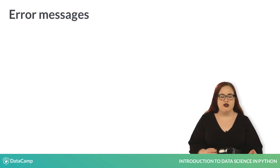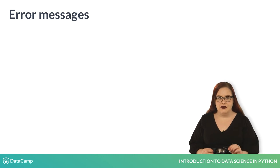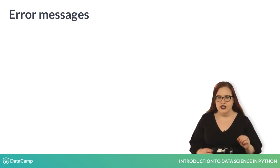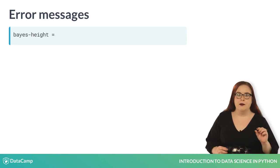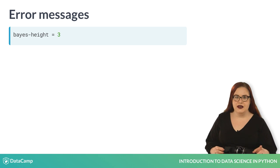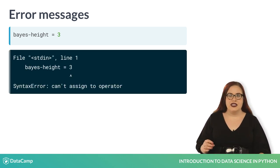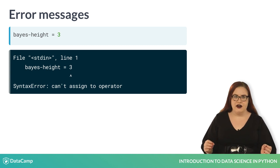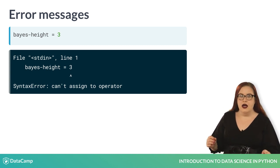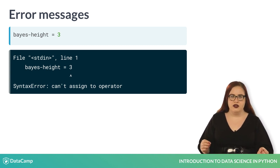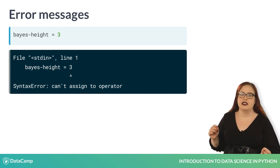Let's see what happens when we try to use an invalid variable name. The variable Bayes-height is invalid because of the hyphen. When we try to enter it, we will receive a syntax error. Above the syntax error, we see the line of code that caused the problem, and a caret that indicates approximately where the problem occurred.